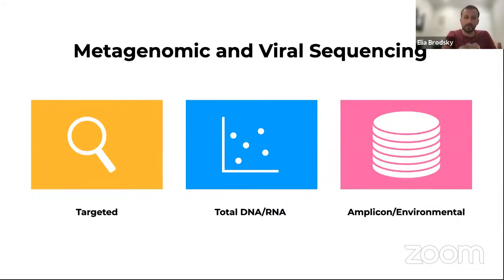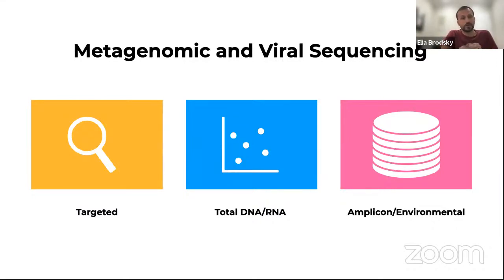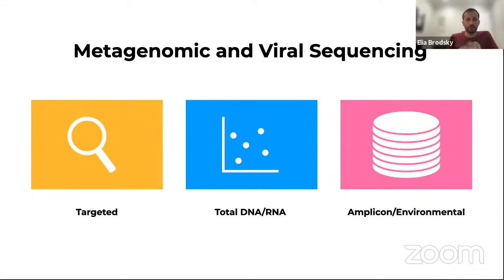Sequencing approaches could be targeted, where library preparation techniques amplify for a specific pathogen or gene using primers. They could be total DNA and RNA, where we use specific primers to focus on a particular type of DNA or RNA. We can take ribosomal amplification, use depletion, but ultimately we're trying to focus on, for example, the human DNA or human RNA and look at all the variation of that host.